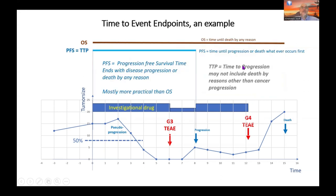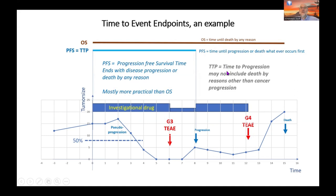Progression-free survival is one. Progression-free survival starts at the beginning of treatment or randomization and goes until either progression or death — whatever occurs first — and death by any reason. There is another very similar one: time-to-progression. The difference is that time-to-progression may not end by a death unrelated to cancer — death by, say, car accident would be considered a censored time point in time-to-progression, not an event.